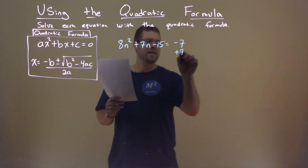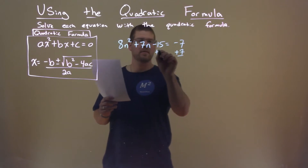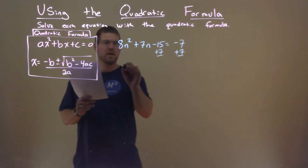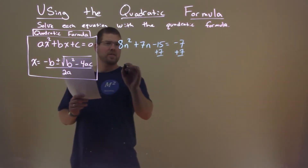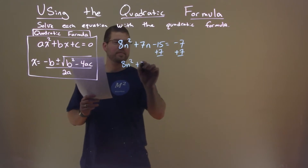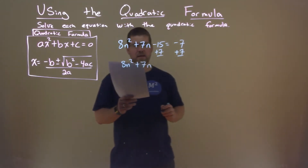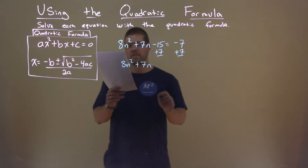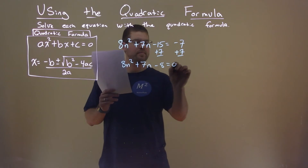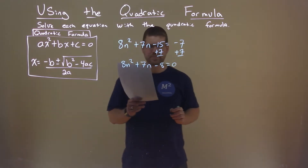First thing I want to do is get everything to the left-hand side and have it equal to 0. So I'm going to add a 7 to both sides. That gives us 8n squared plus 7n, and negative 15 plus 7 is minus 8. That equals 0.